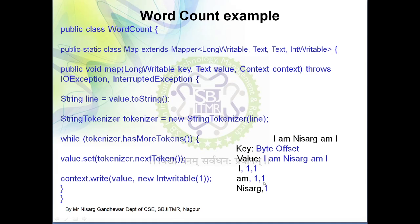So the final output of the word count program is: I → 2, am → 2, Nisarga → 1. Context is used for writing the output. This is how the Mapper class and Reducer class work together.